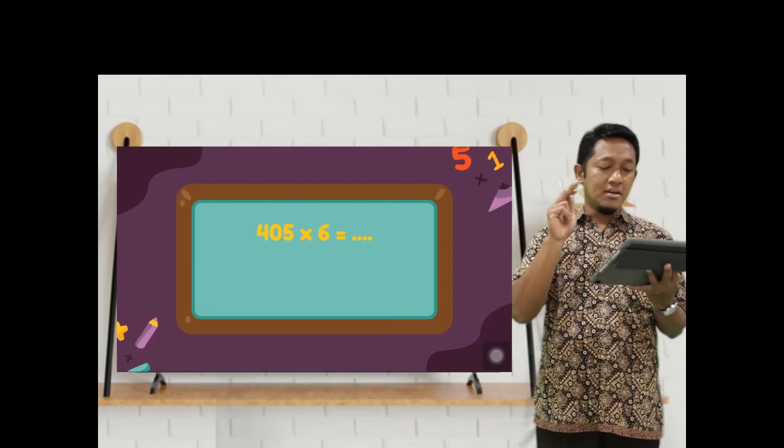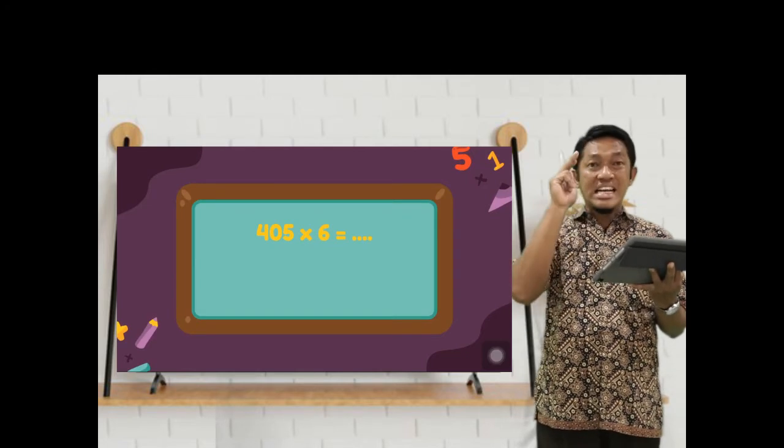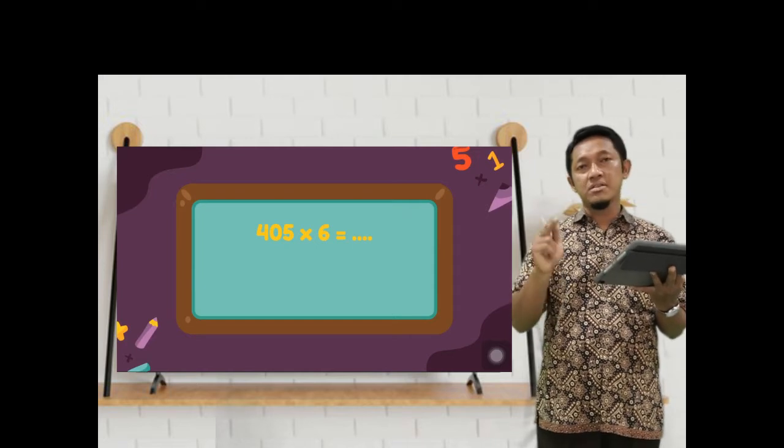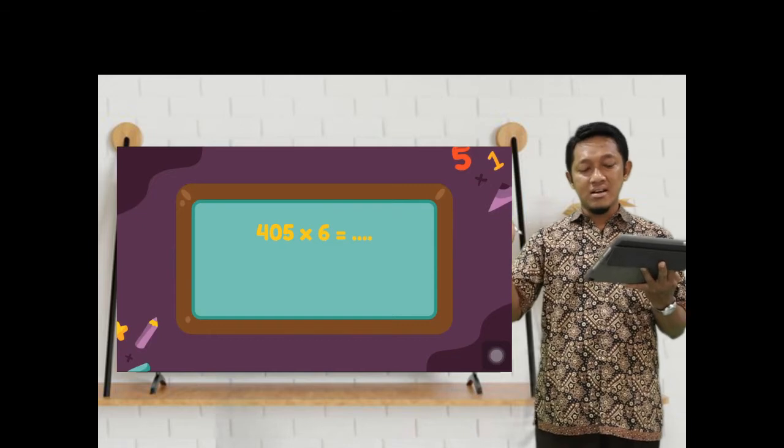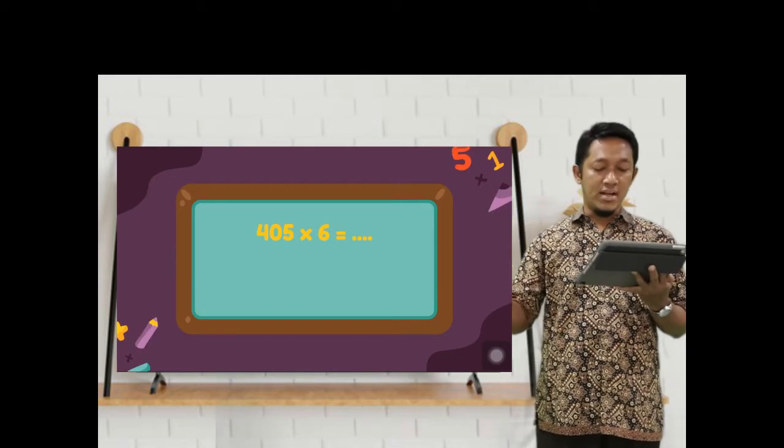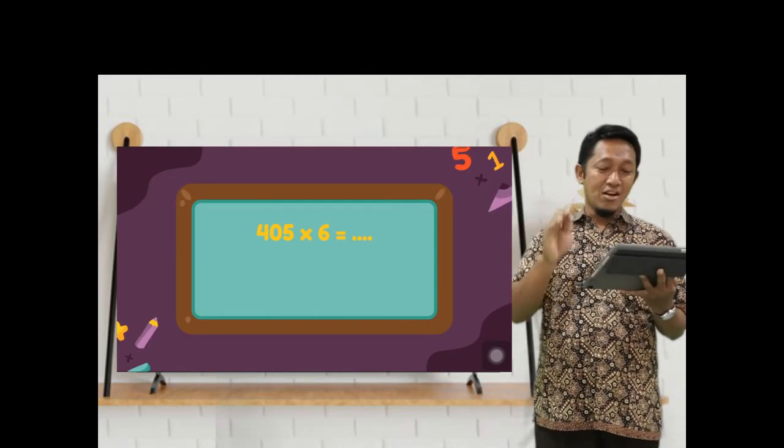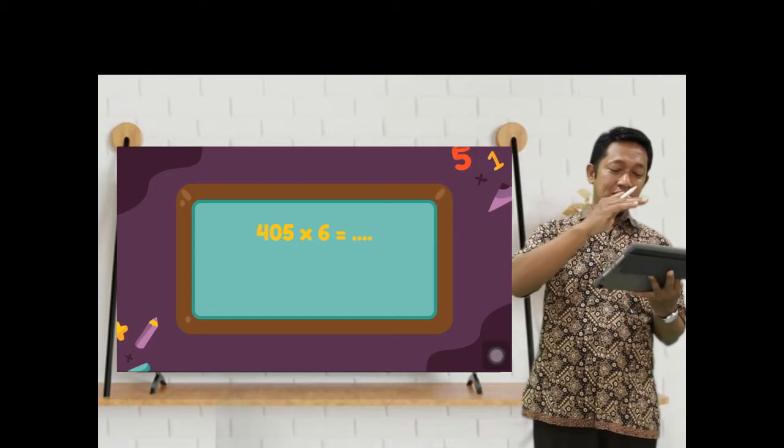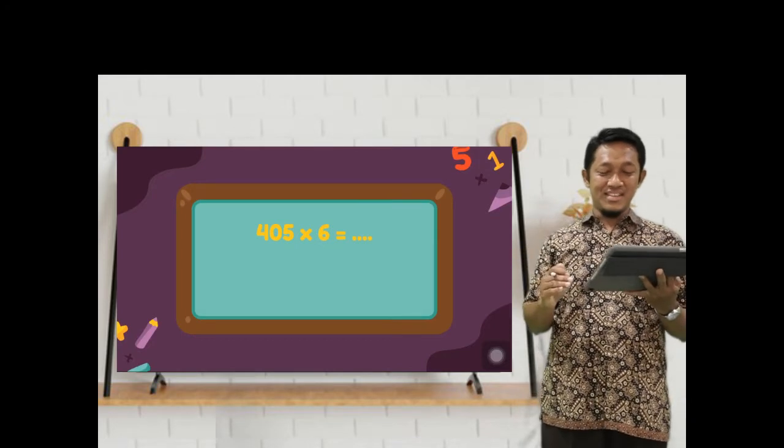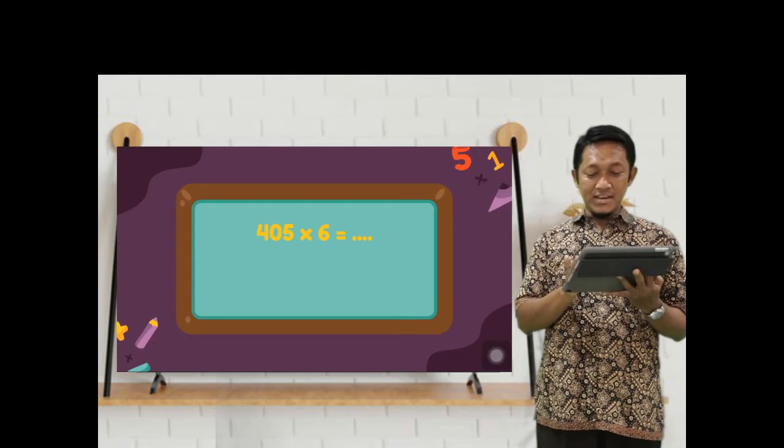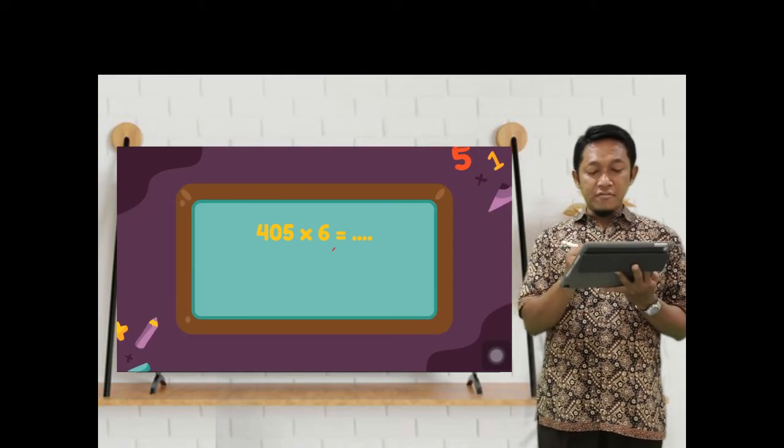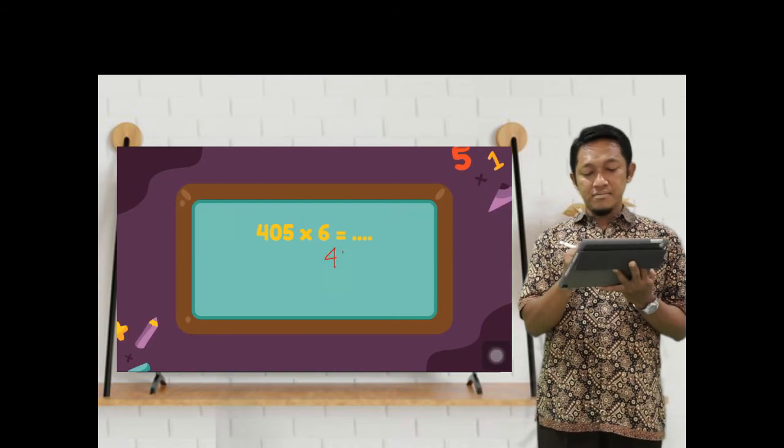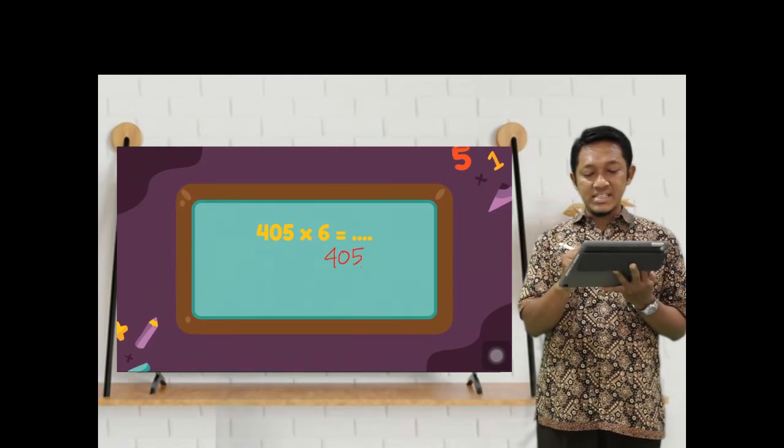Now we will solve the last topic. Three digits versus single digit. Hundreds, tens, ones multiplied by ones. The trick is straight, diagonal, diagonal. We have 405 multiply by 6.